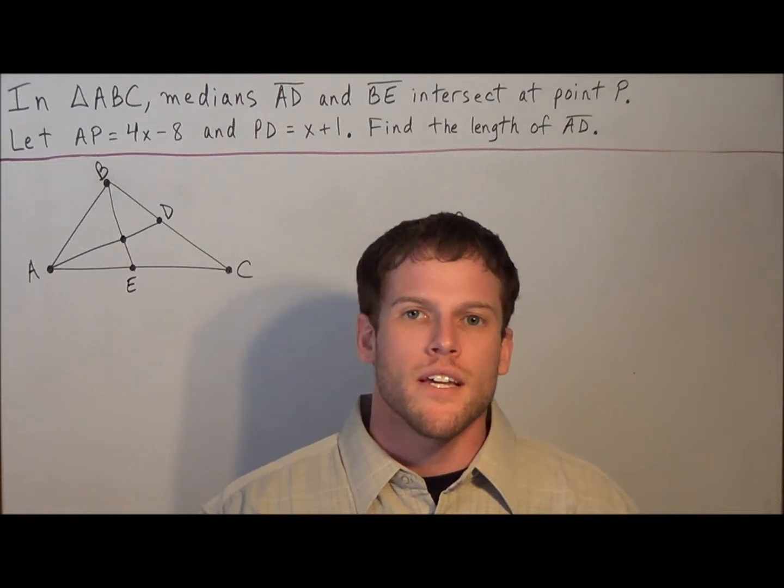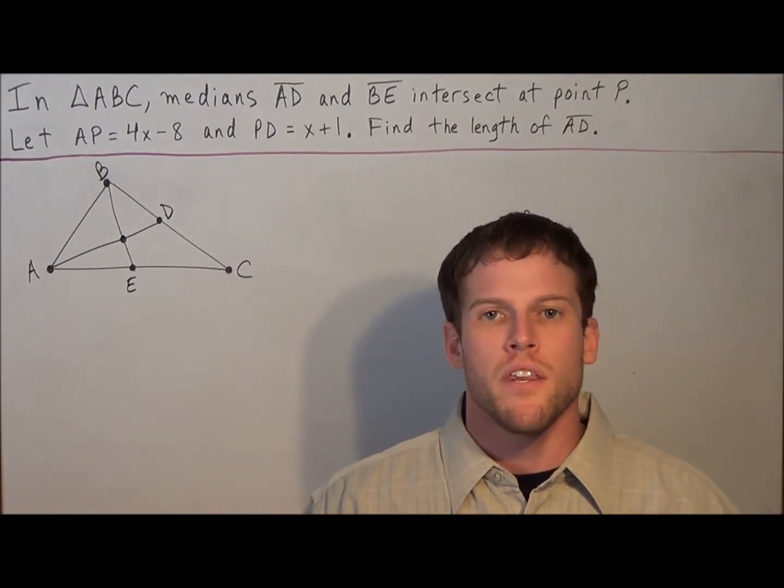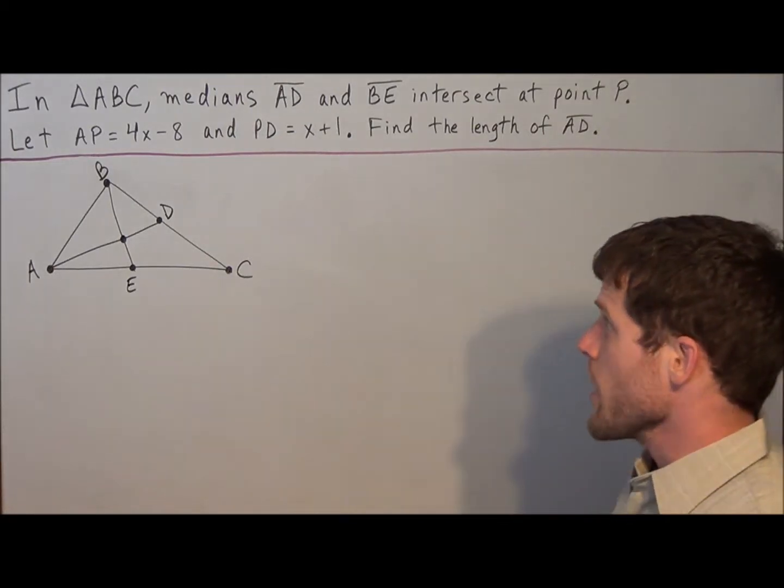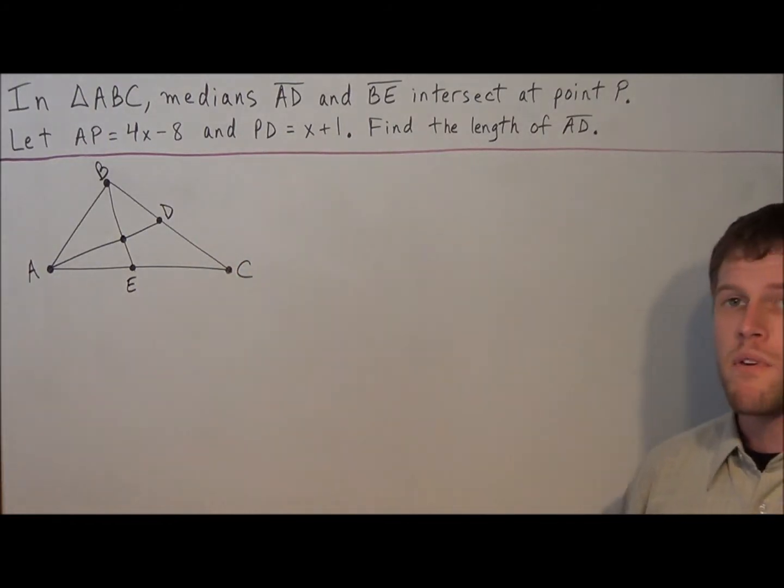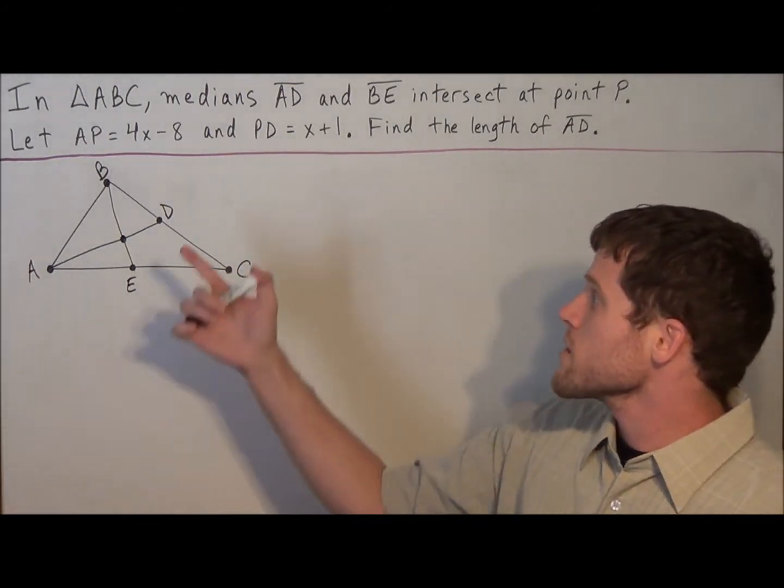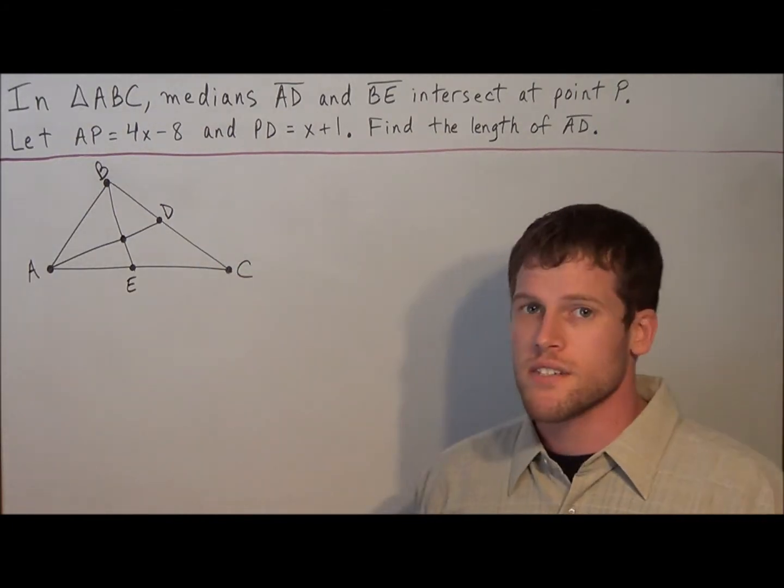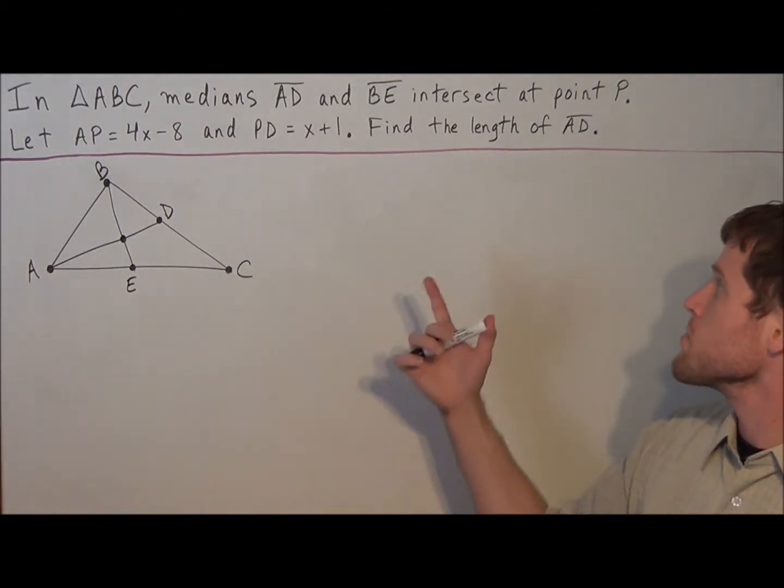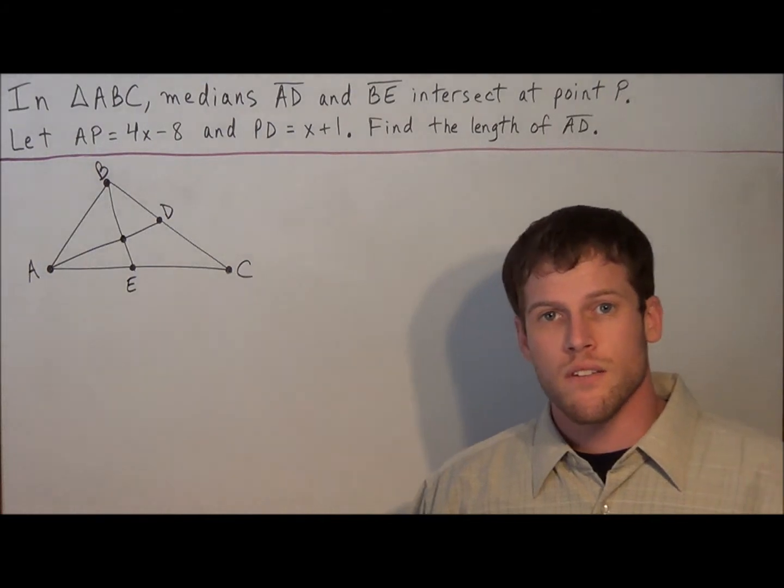Hi, my name is Mr. D, and today I want to take a look at a median and centroid problem. So we have in triangle ABC, medians AD and BE intersect at point P. We have let AP equal 4x minus 8, and PD equal x plus 1, and we need to find the length of line segment AD.